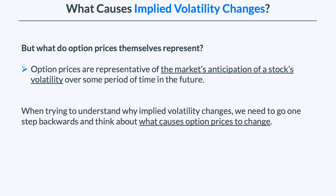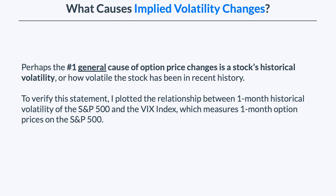When trying to understand why implied volatility changes, we need to go one step backwards and think about what causes option prices to change, as that will give us our answer. Perhaps the number one general cause of option price changes is a stock's historical volatility, or how volatile the stock has been in recent history. To verify this, I plotted the relationship between one-month historical volatility of the S&P 500 and the VIX Index, which measures one-month option prices on the S&P 500.